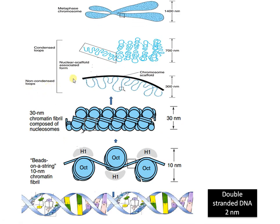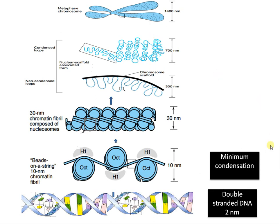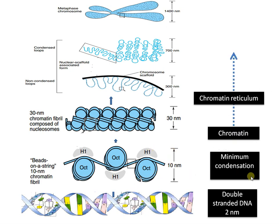This is further condensed to form a 30-nanometer chromatin fiber composed of nucleosomes. Further formation includes a non-condensed loop, a condensed loop, and ultimately the metaphase chromosome, where the chromosome has maximum condensation. The minimum condensation or basic level of DNA packaging is the nucleosome model — the beads-on-a-string model — and each unit is called a nucleosome.